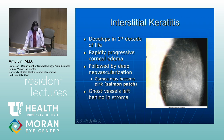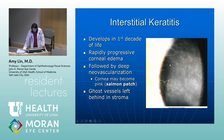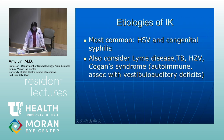Interstitial keratitis develops in the first decade of life and leads to rapidly progressive corneal edema followed by deep neovascularization. The cornea may actually become pink — this is the salmon patch of the cornea. Once the neovascularization fades away, ghost vessels are left behind in the stroma with no blood really going through them. Etiologies include most commonly HSV and congenital syphilis. Other rarer conditions include Lyme disease, TB, zoster, and Cogan syndrome, which is an autoimmune condition associated with vestibular-auditory deficits.